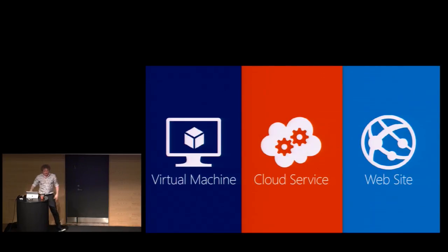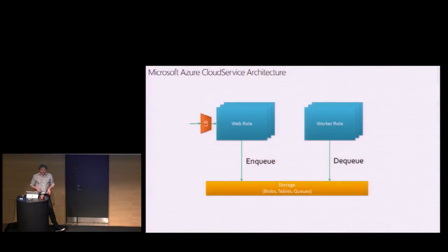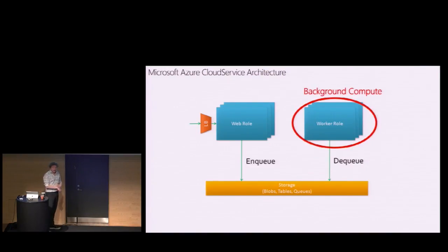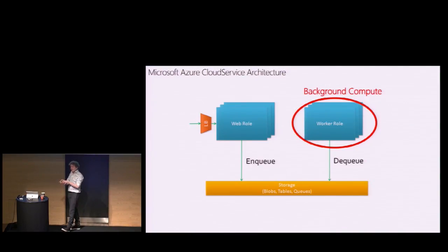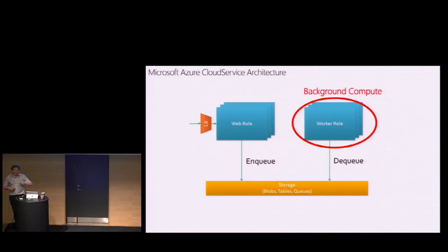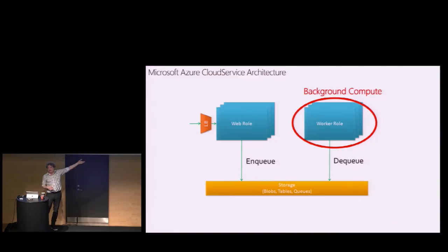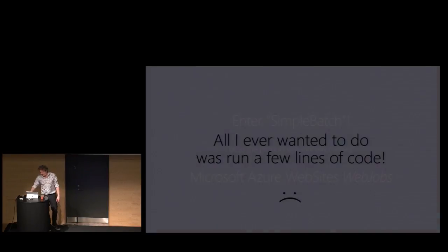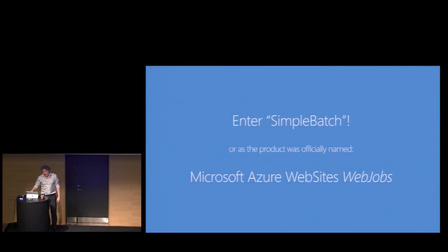Even with Websites, if you wanted to do background compute you still kind of needed a worker role. People started running background threads inside web applications, writing their own task management with thread queue and worker items — maybe 150 lines of code. People really wanted to break out of this ceremony — stop under-utilizing servers, stop paying 24/7 for compute you don't always need. Really, you just want to run a few lines of code. Don't give me a whole server for that.